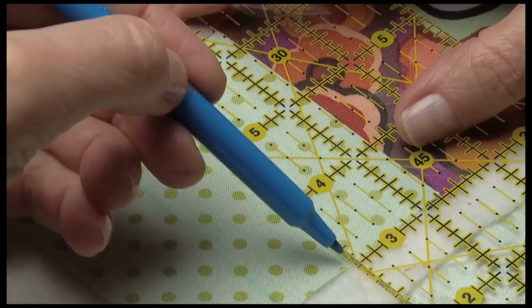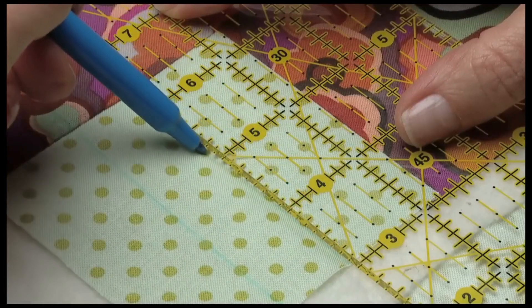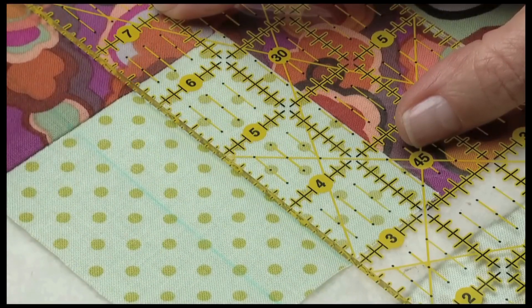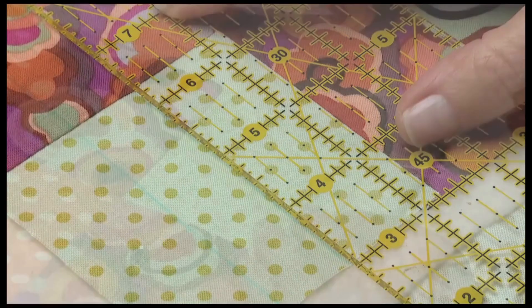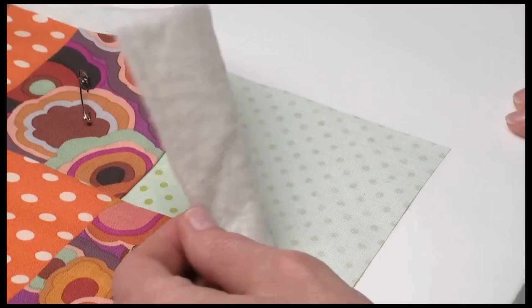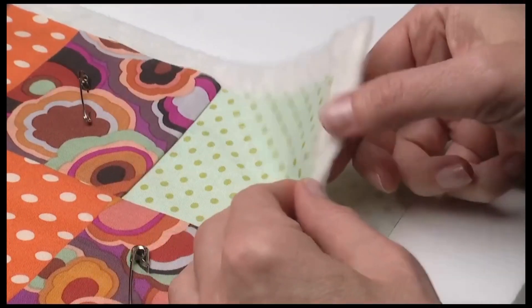Before sewing the quilt layers, if desired, draw stitching guidelines onto the fabric using a fabric marking tool and ruler. Secure the top fabric, batting, and backing fabric together with pins or basting.